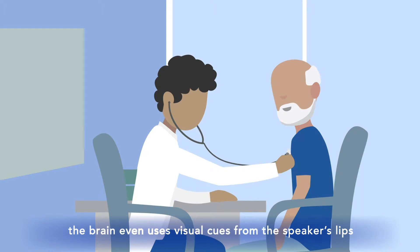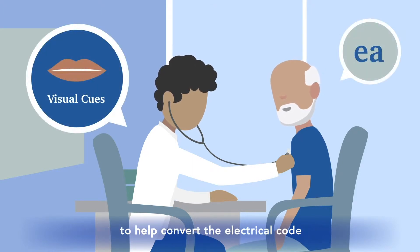In these cases, the brain even uses visual cues from the speaker's lips to help convert the electrical code from the inner ear into meaning.